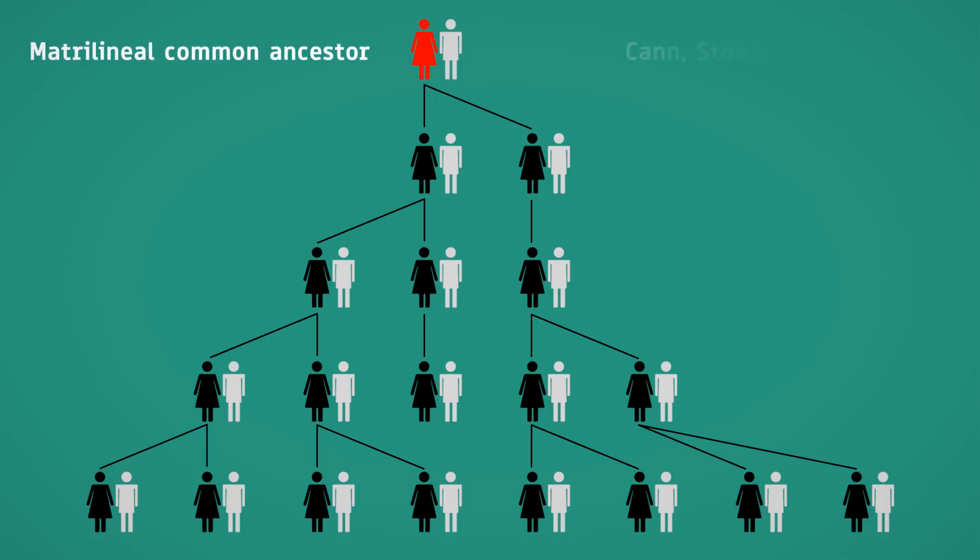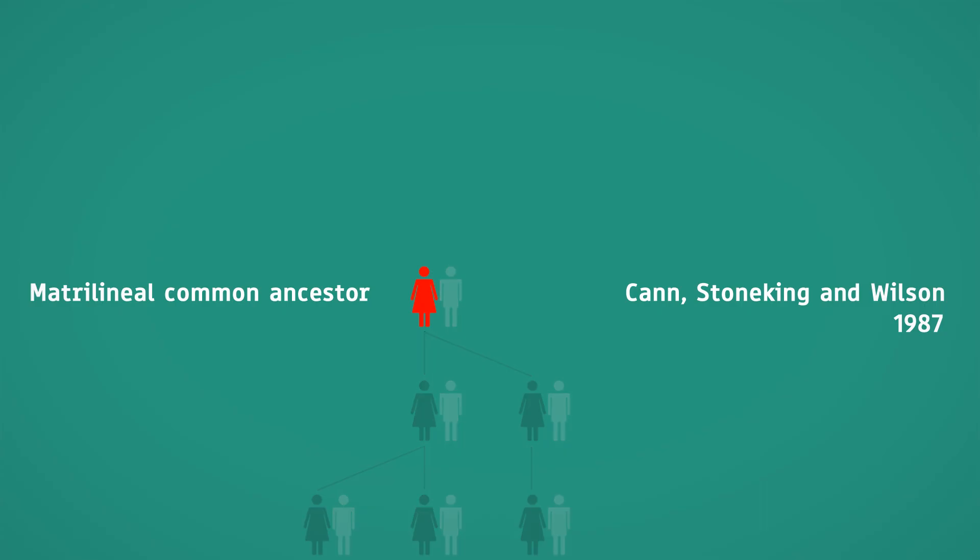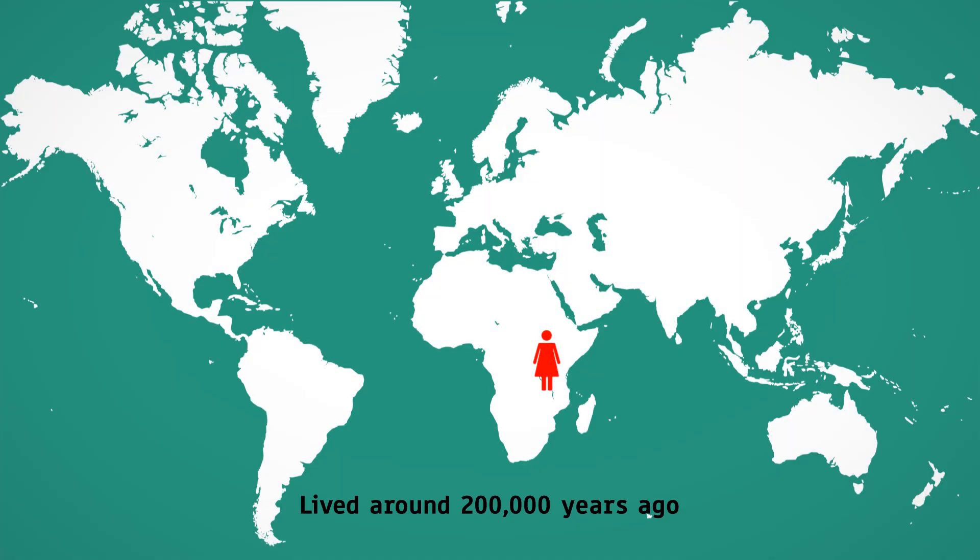This is exactly what Cannes, Stoneking and Wilson did in 1987, and found out that in fact, all humans alive today do have a common female ancestor who probably lived about 200,000 years ago in Africa. They named her mitochondrial Eve.